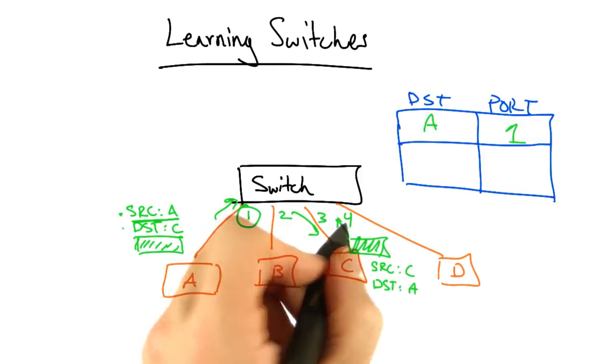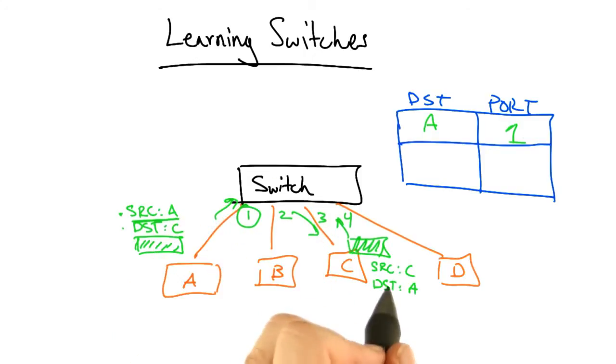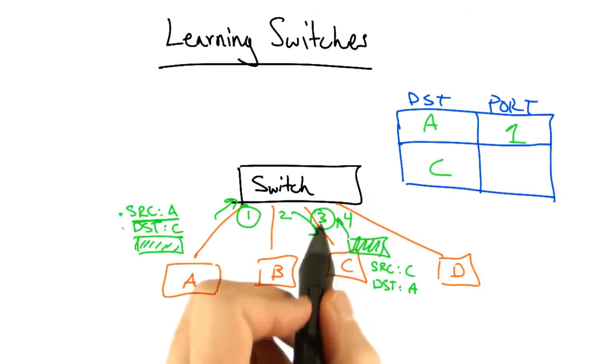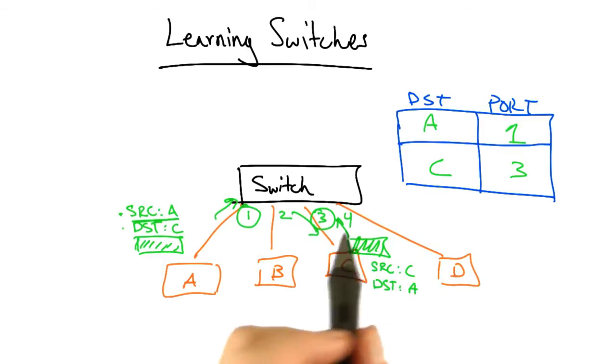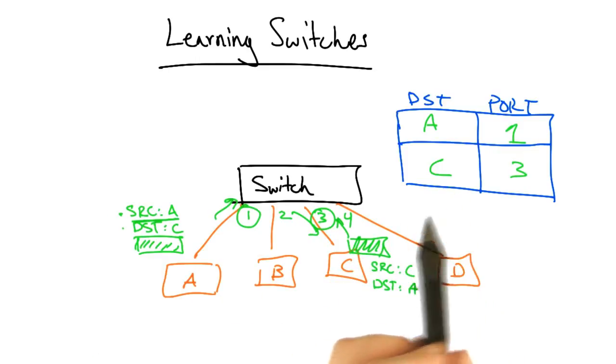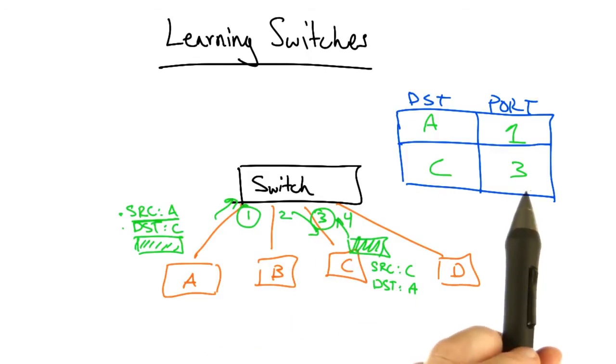Similarly, when C replies, the switch will see a frame with source MAC address C arriving on input port 3. So it knows that when frames are destined for MAC address C, it no longer needs to flood them out every port, but can simply forward the frame out output port 3.